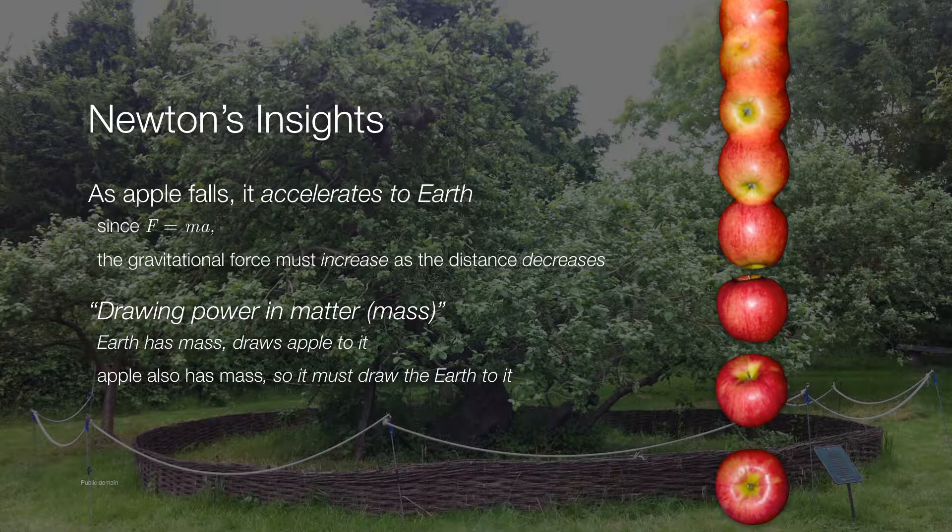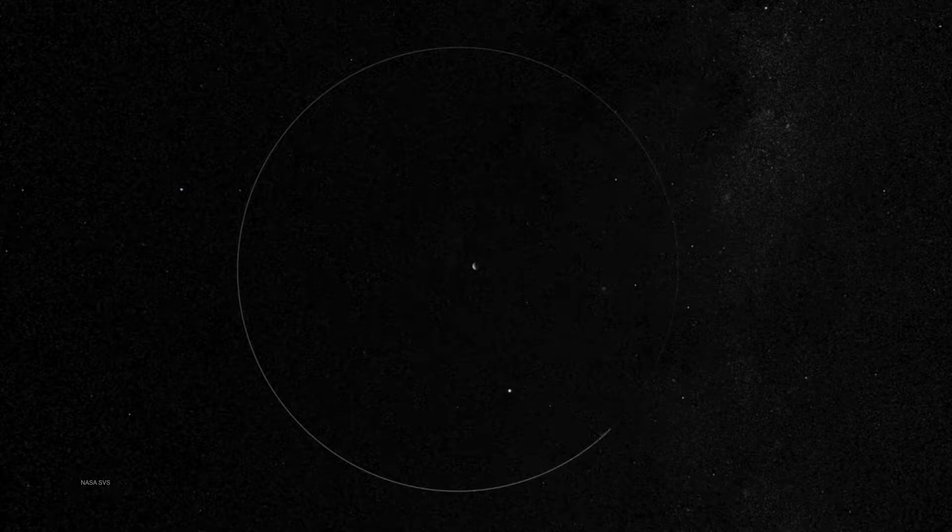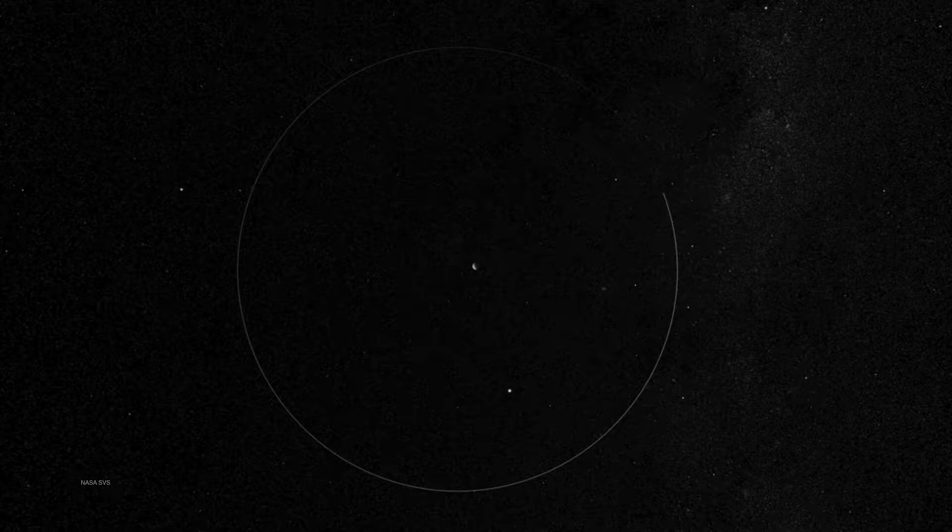But until this time, gravity was thought of exclusively as a force that acted on the surface of the earth. No one really understood that gravity existed beyond earth. And so Newton's great insight was that the same gravitational forces that allows the apple to fall to earth is the same gravitational force that allows the moon to fall in an orbit around the earth. So this was a major jump in our understanding of the nature of gravity.